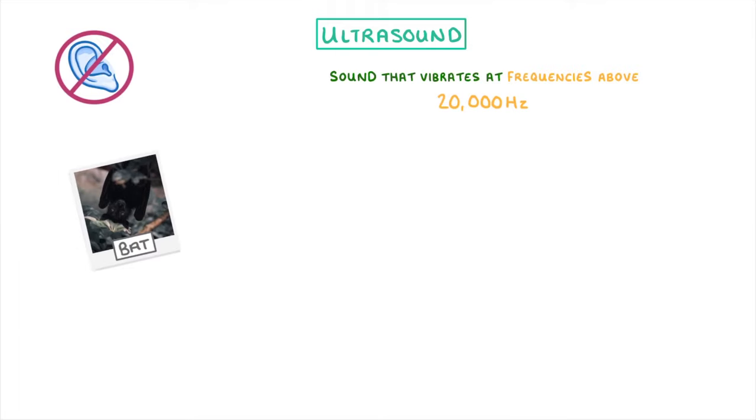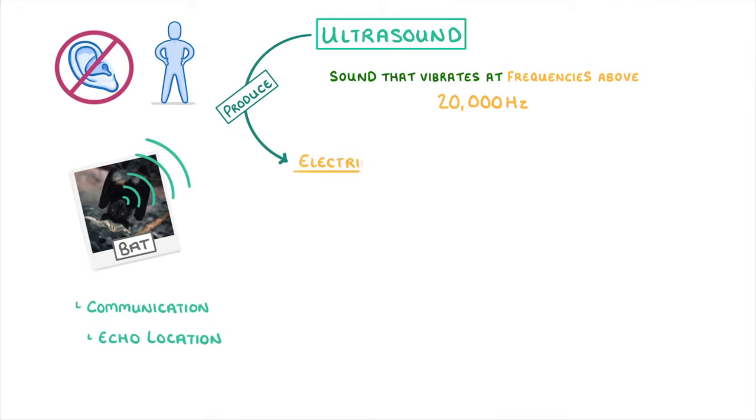Some animals, like bats, naturally produce ultrasound for things like communication or echolocation. But as humans, we only produce ultrasound using electrical devices.